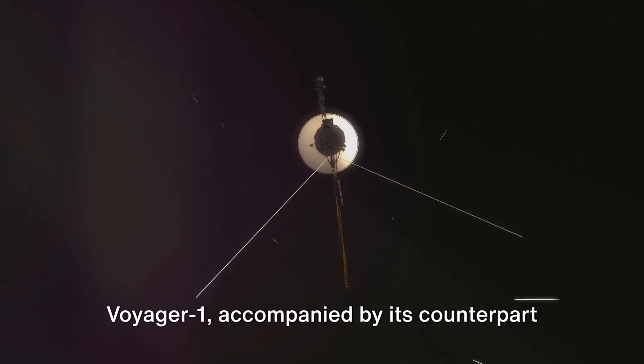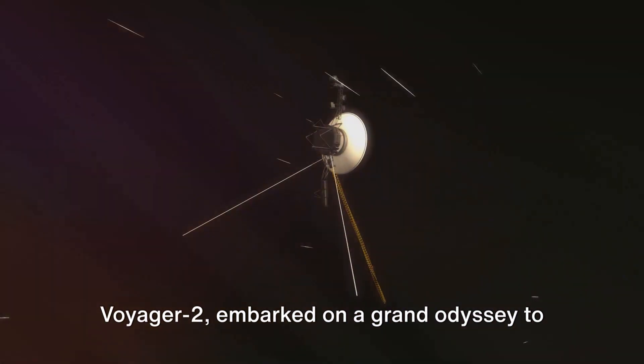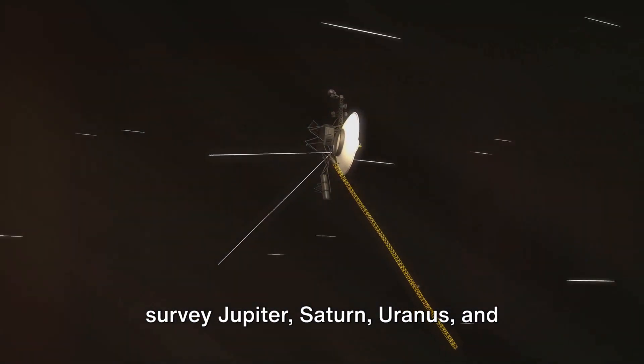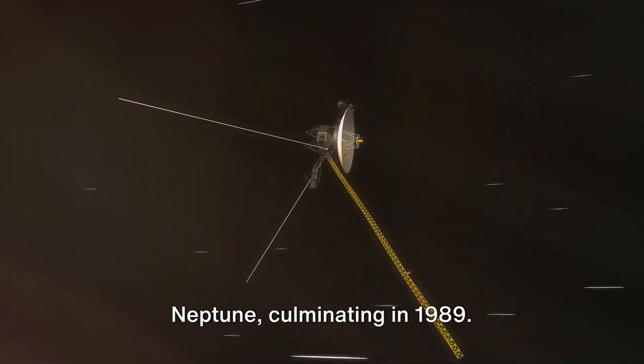Voyager 1, accompanied by its counterpart Voyager 2, embarked on a grand odyssey to survey Jupiter, Saturn, Uranus, and Neptune, culminating in 1989.